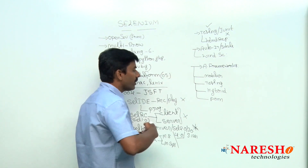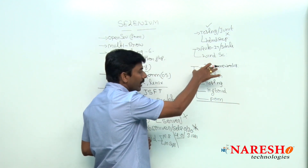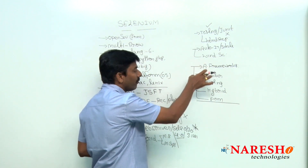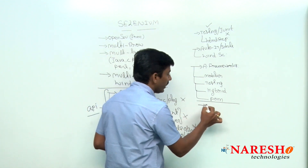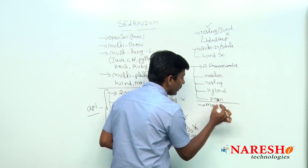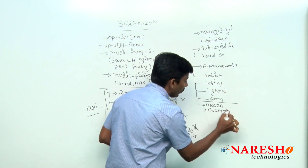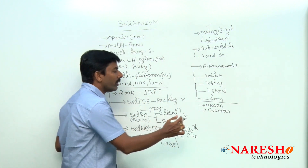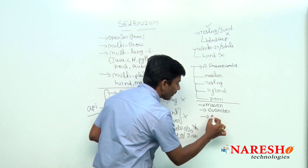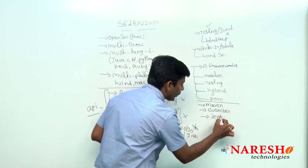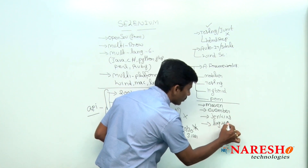Once the frameworks part is completed, most of the things will be done. But while working with these frameworks, we will also understand working with some other tools. In that, one tool you will work with is Maven, and then Cucumber. We need to understand about Maven, Cucumber, Jenkins, and Log4j.